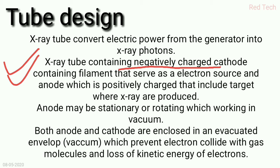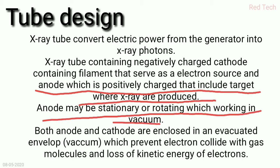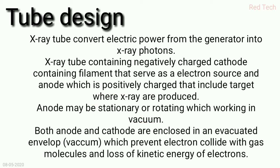The x-ray tube contains a negatively charged cathode, which contains the filament and serves as the electron cloud source, and an anode. The cathode is negatively charged and the anode is positively charged. The anode is basically the target where x-rays are produced. The anode may be stationary or rotating, and both operate in vacuum.